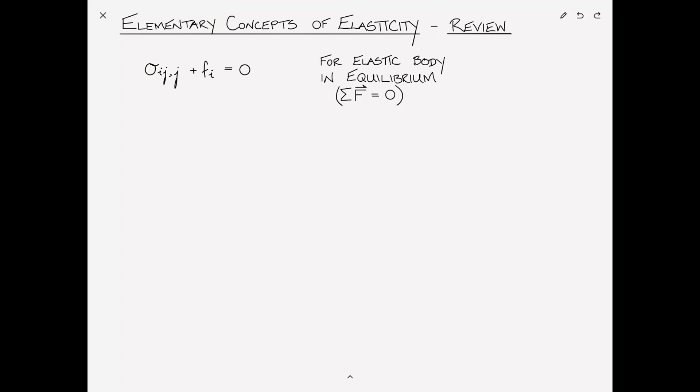If you haven't had this material before, you're just going to have to accept my word for it for now. Equally importantly is this idea of index notation — these i's and j's. When an index is repeated, such as the j here, it means that we're going to sum over that index. If I were to expand out this equation, it actually gives us three equations in three dimensions. The comma j means the derivative with respect to x sub j. So ∂σ₁₁/∂x₁ + ∂σ₁₂/∂x₂ + ∂σ₁₃/∂x₃ + f₁ = 0 would be the equation in the x₁ direction. Similarly, there are equations in the other directions too.